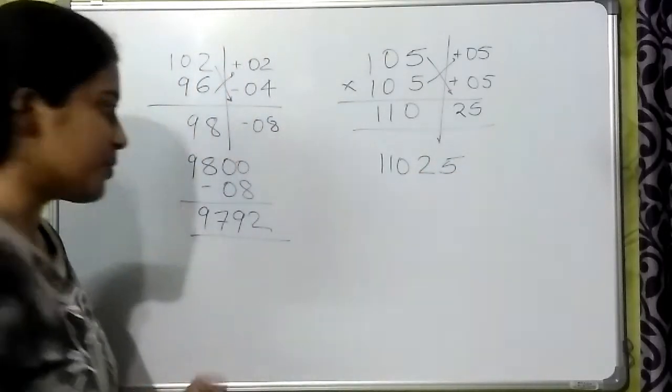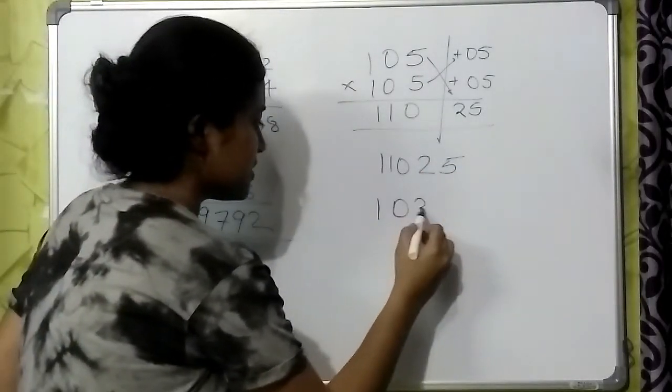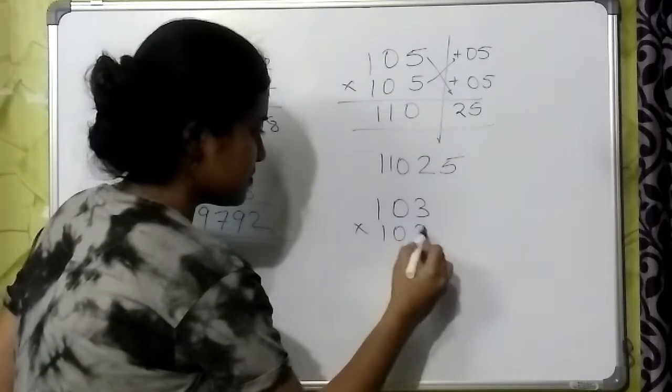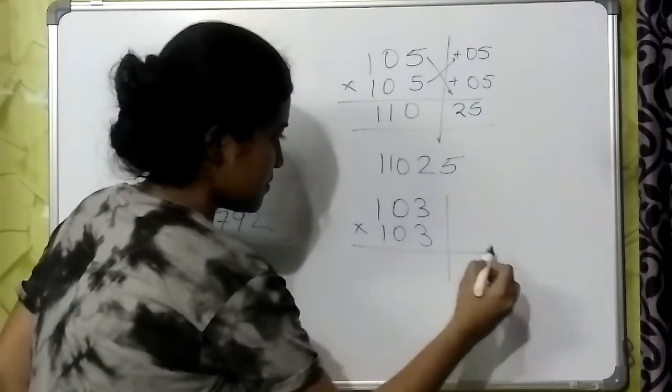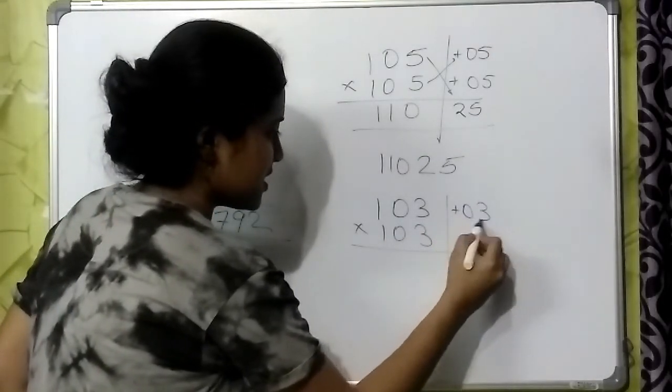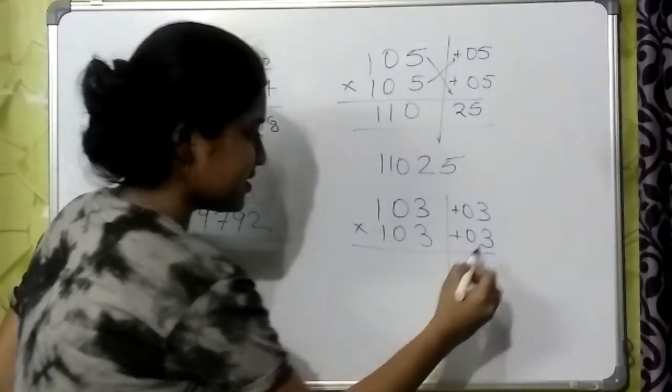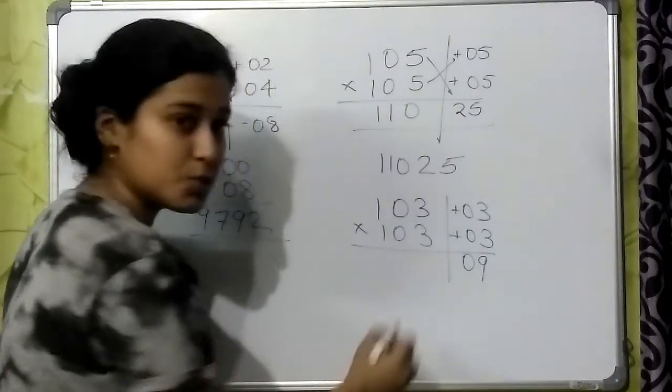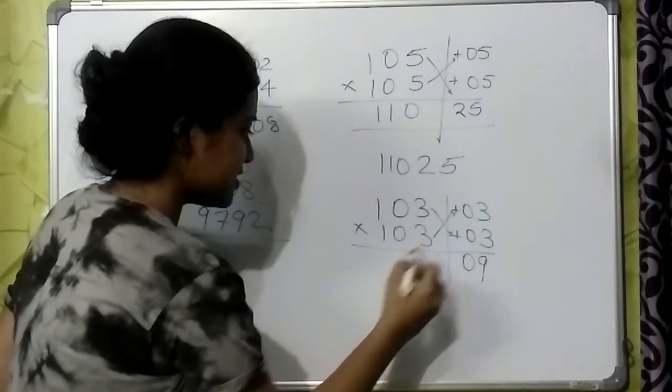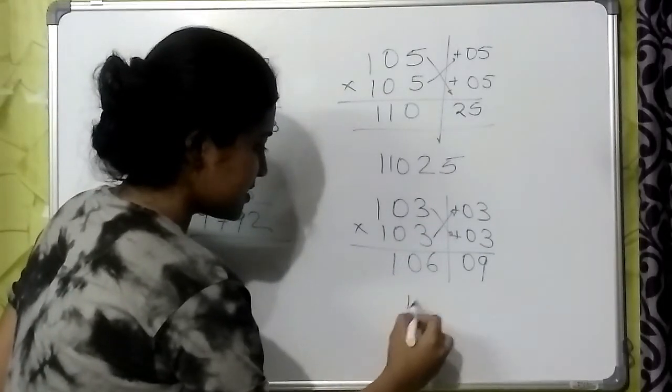Let us take one more number. 103 into 103. This differs from plus 3. Same over here. Multiplying these two. Cross addition and this is what we get.